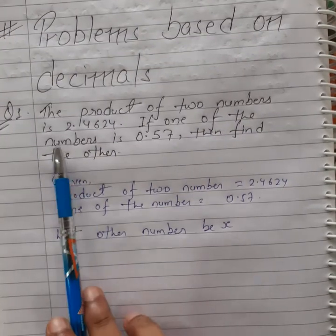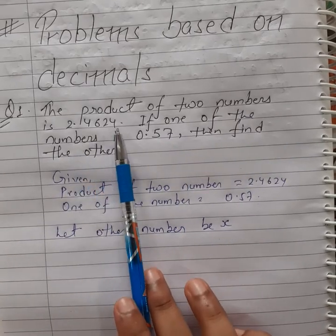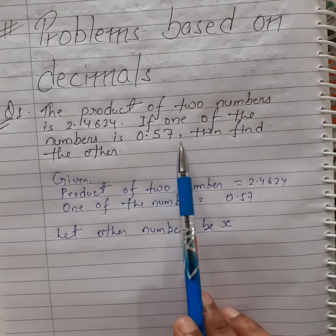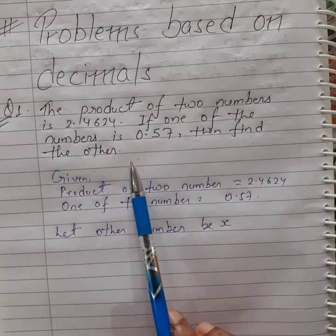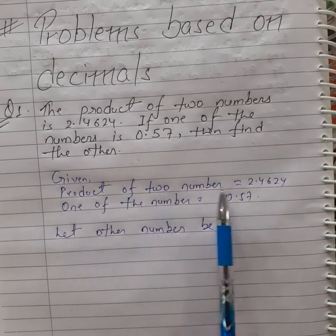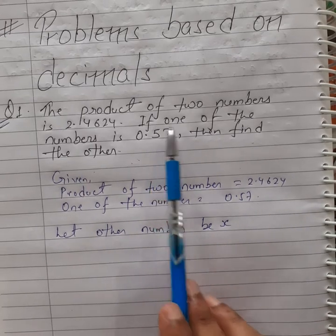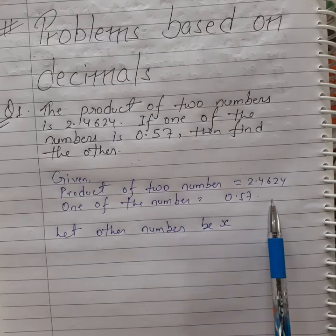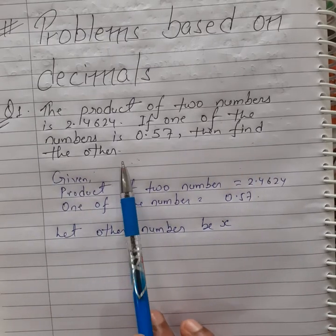The first question is: the product of two numbers is 2.4624. If one of the numbers is 0.57, then find the other number. What is given? The product of two numbers is 2.4624, and one of the numbers is 0.57. We have to find the other number.